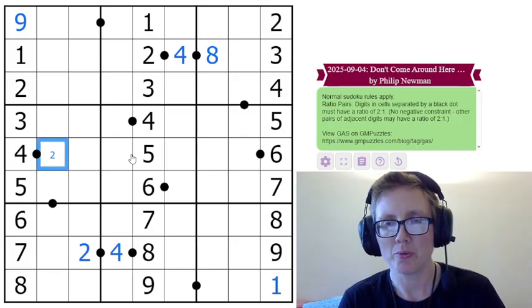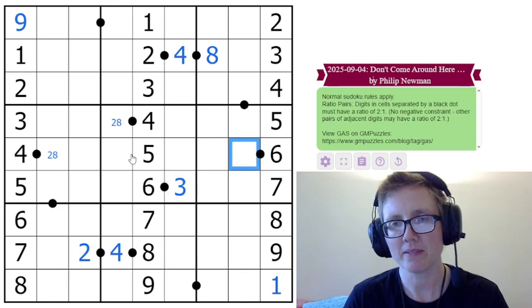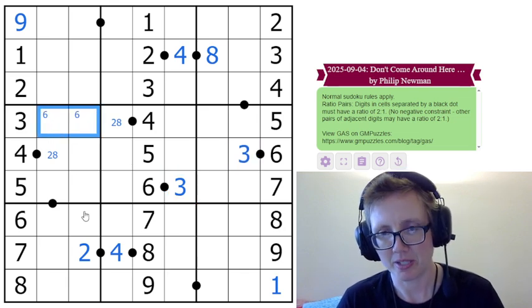4 has to go to either 2 or 8, so I'm going to pencil those in. 6 will always go to 3, and there's going to be a 6 in one of those cells somewhere.